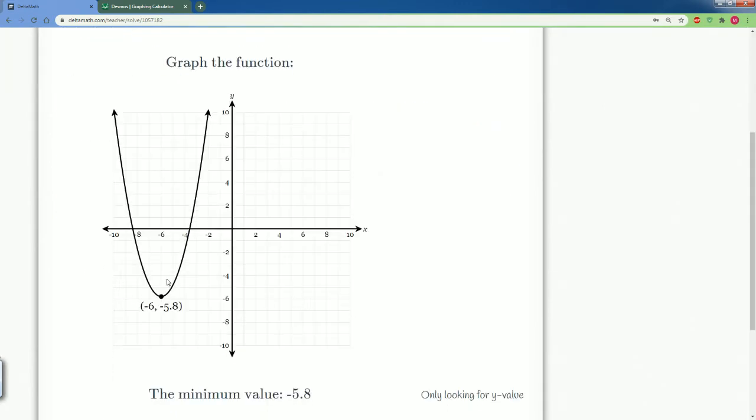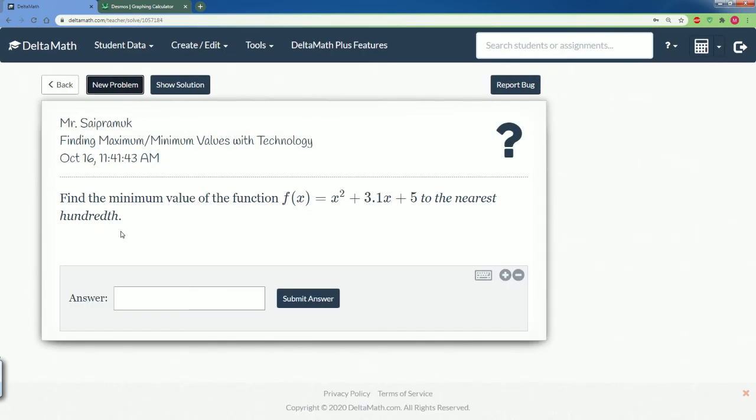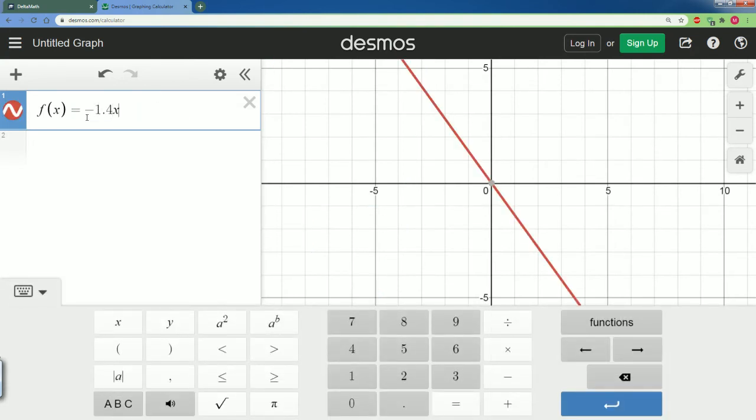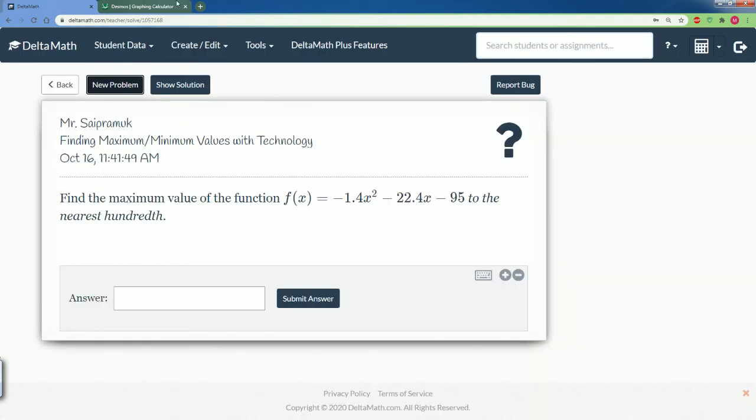That's the point. The value is negative 5.8 because we're only looking for the y value. Let's do one more. This is find the minimum, let's find maximum. Let's enter this into our calculator: f of x is equal to negative 1.4x squared minus 22.4x minus 95. Let's type that in here: negative 1.4x squared minus 22.4x minus 95. I just want to make sure I enter that correctly. Yes.